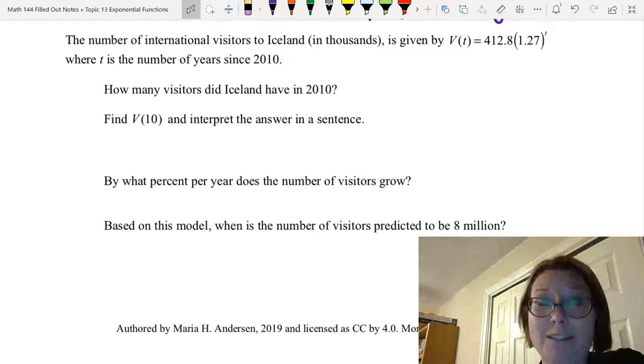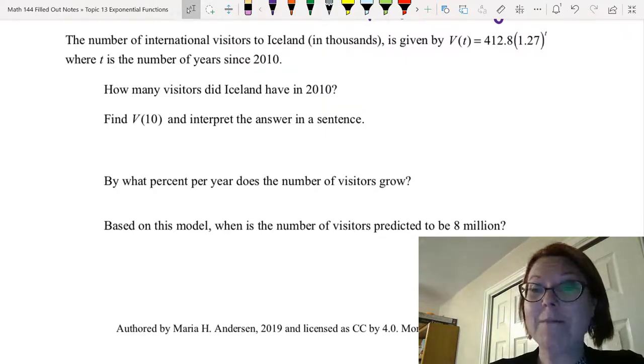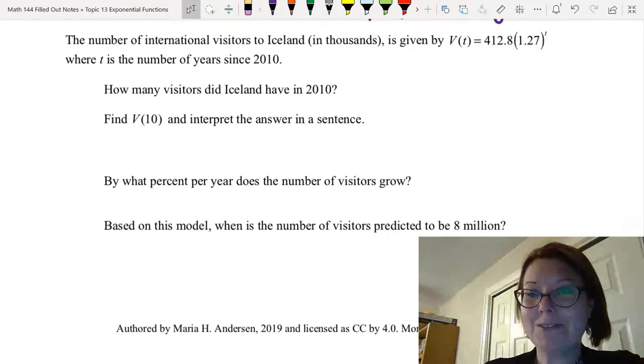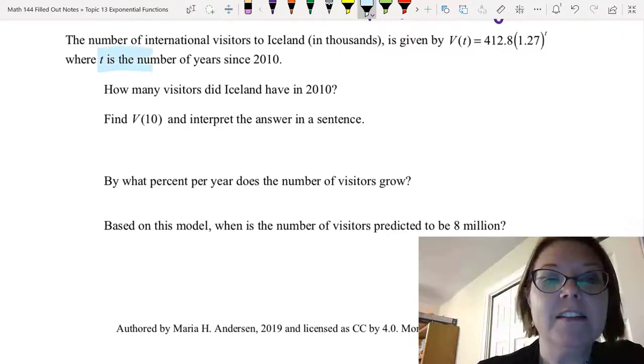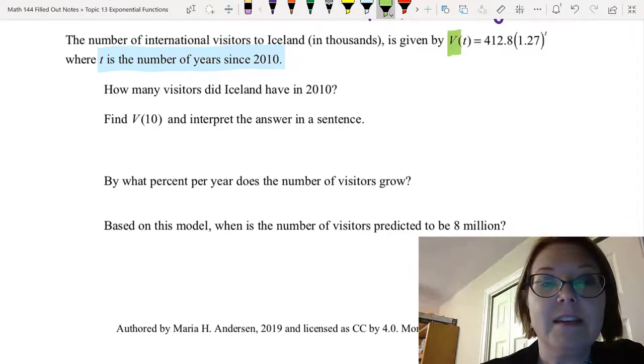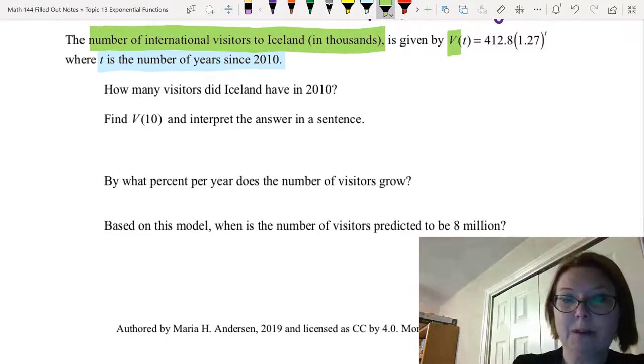Let's go through this final problem together. This is real data from Iceland about the number of international visitors to Iceland. It is an exponential function. It's given by V(t) = 412.8(1.27)^t. T is the number of years since 2010. So that's one declaration. And V is the number of international visitors to Iceland in thousands.